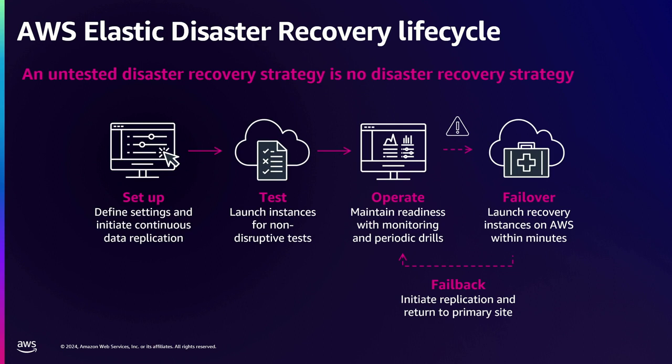When an incident happens, you activate the failover. You have the option to roll back once everything is restored to wherever you were running that environment before the incident, or if you want to keep running on AWS, that's an option too. So there's no lock-in — you can still recover back to your on-prem if you want to.